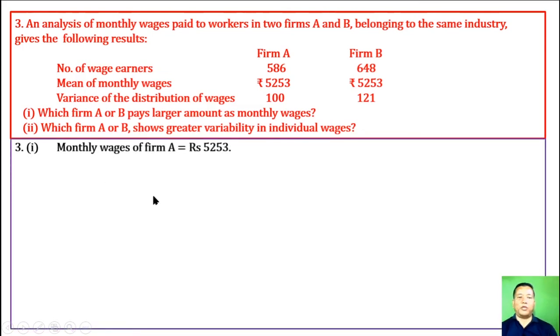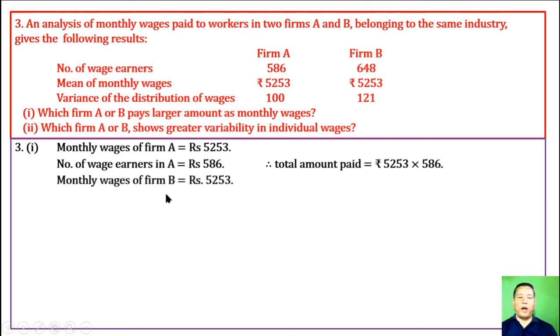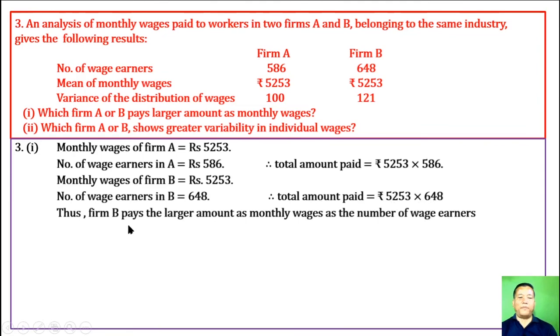Monthly wages of farm A is Rs 5253. Number of wage earners in farm A is 586. Total amount paid is 5253 times 586. Number of wage earners in B is 648. Total amount paid is 5253 times 648. Thus, farm B pays the larger amount as monthly wages as the number of wage earners in farm B is more than farm A.